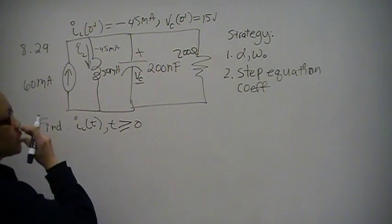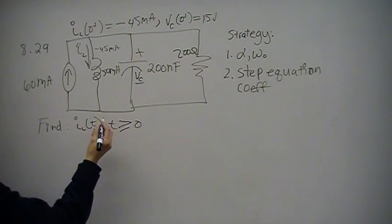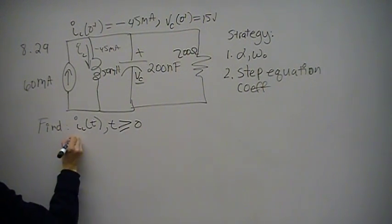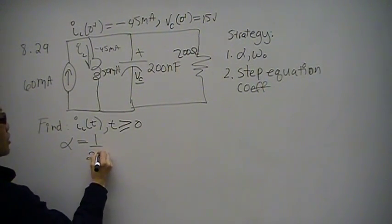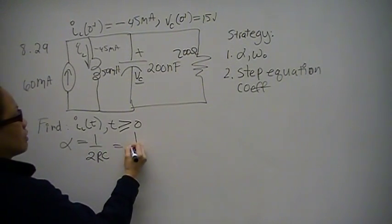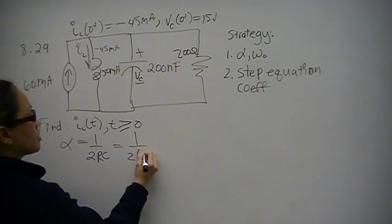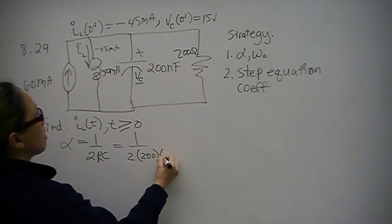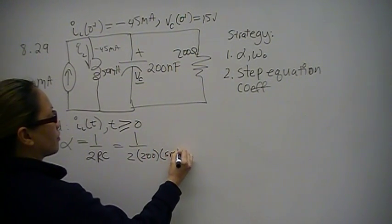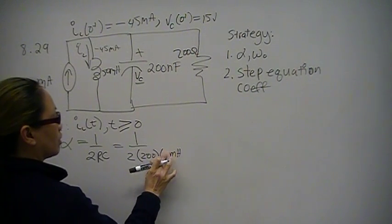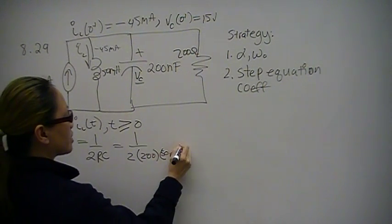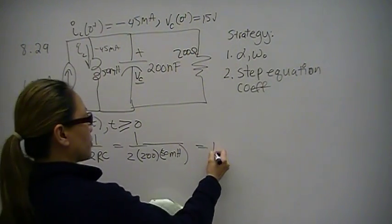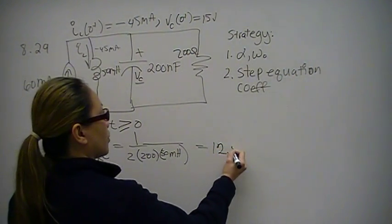First thing we want to do is compute alpha and omega-naught for a parallel RLC circuit. Alpha is going to be 1 over 2RL, which is 1 over 2 times 200 ohms times 50 millihenrys. Put that into your calculator and you should get 12,500 radians per second.